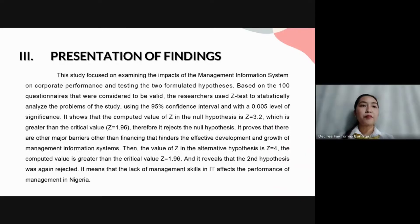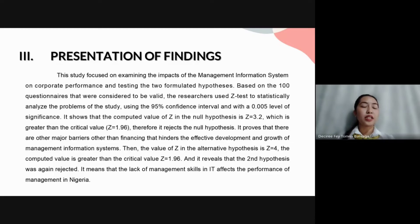For the presentation of findings, the study focused on examining the impacts of the management information system on corporate performance and testing the two formulated hypotheses. Based on 100 valid questionnaires, the researchers used Z-tests to statistically analyze the problems of the study. Using a 95% confidence interval with a 0.005 level of significance, the computed value of Z in the null hypothesis is Z = 3.2, which is greater than the critical value Z = 1.96. Therefore, it rejects the null hypothesis.